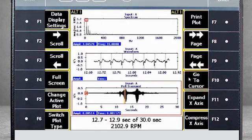F10 go to cursor. When you use the arrow keys to move the cursor to another location in the data, press F10 to see the associated spectrum and waveform.